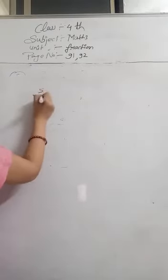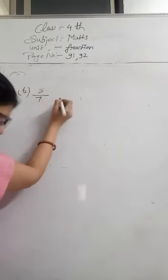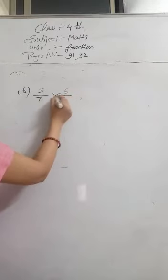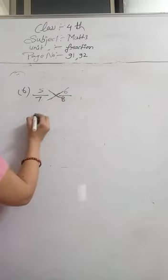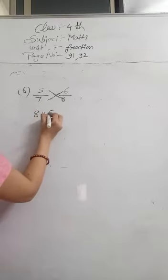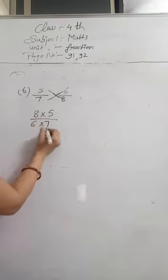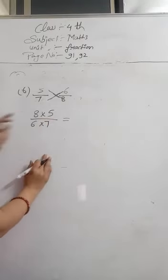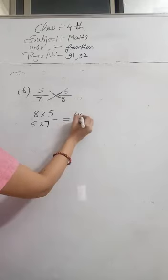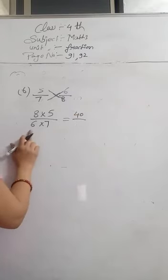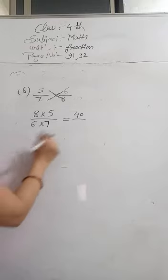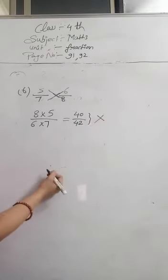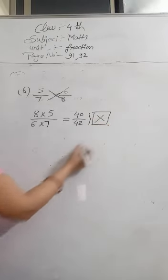Sixth one is 5 by 7 and 6 by 8. We will do cross multiplication: 8 multiply 5 and 6 multiply 7. 8 fives are 40 and 6 sevens are 42. So these are not equal, so we will put a cross sign here.